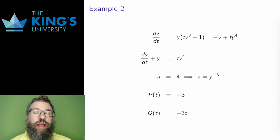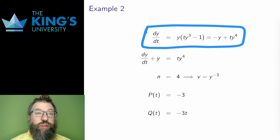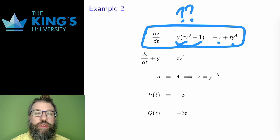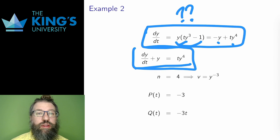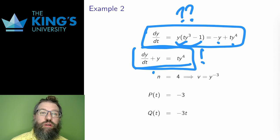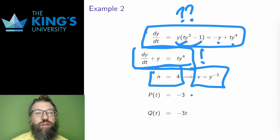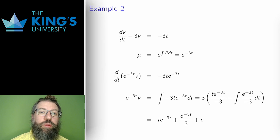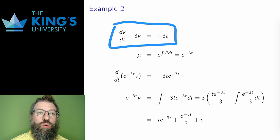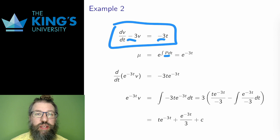Here's one more — like the second homogeneous example, you might have to do some work to recognize the form. I multiply the y in to get negative y plus ty^4, and taking negative y to the left lets me recognize the Bernoulli form. So y^4 gives n equals 4, and the substitution is v equals y^(−3). The function p from the original expression is negative 3, and q is negative 3t. Going directly to the new differential equation: dv/dt minus 3v equals negative 3t.